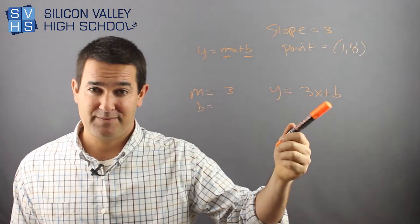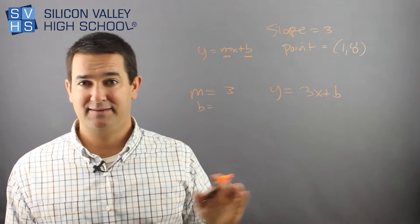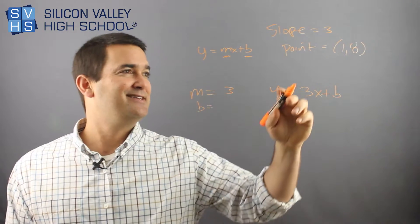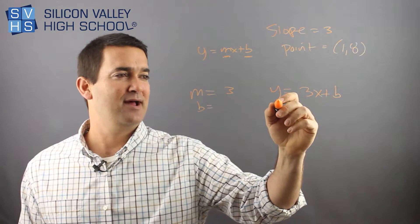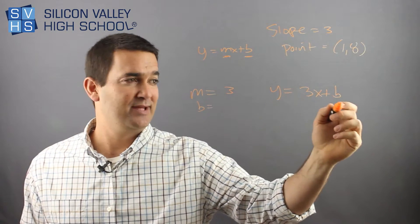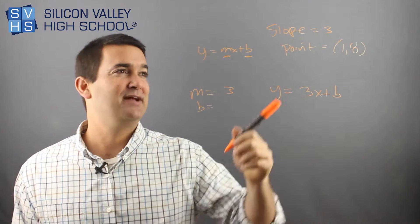If I knew my b, my y-intercept, then we'd be done, right? So what if I had an x and a y? If I had an x and a y, couldn't I plug them in and then I'd only have one variable, b, and I could solve for it? I totally do.